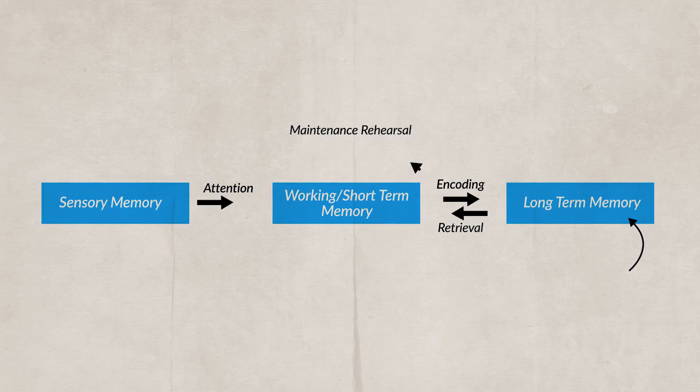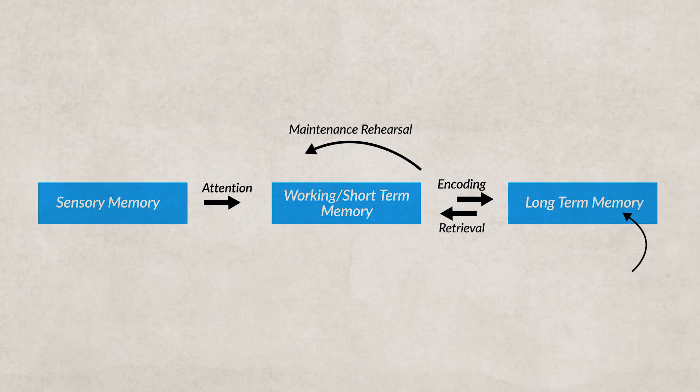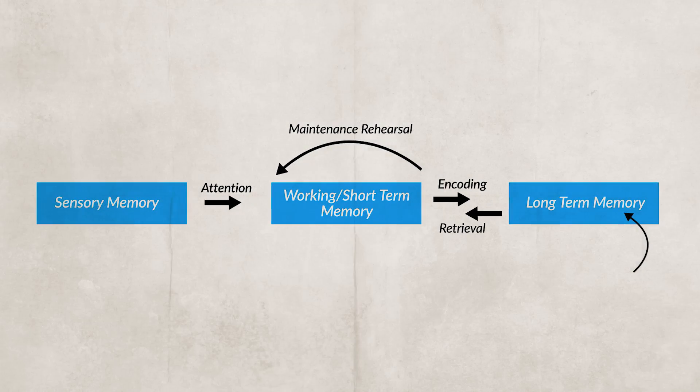Moving into our long-term memory, we can see that over time certain stored memories can decay. For example, maybe you took a French course in your early years of school, but stopped taking classes in college and stopped practicing the language altogether. Over time, you'll see your ability to remember that information decline and you may completely forget what you learned about the language.